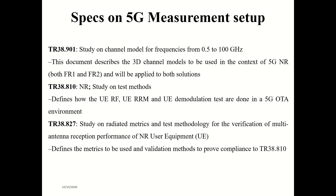Spec 38827 is a study on radiated metrics and test methodology for verification of multi-antenna reception performance of inner equipment. It defines metrics and validation methods to provide compliance with 38810. It is specific to multi-antenna reception — MIMO — so MIMO verification is based on the test setup defined in 38810.